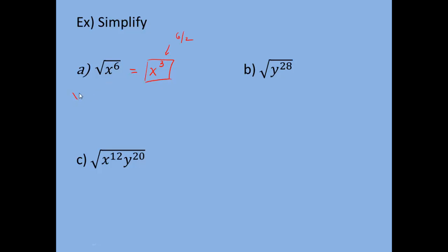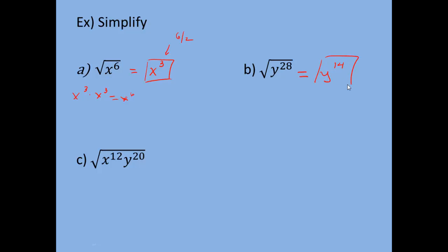The reason this works is because x to the 6th is x to the 3rd times x to the 3rd. When you multiply, you add exponents, giving you x to the 6th. So the square root of x to the 6th asks what times itself gives you x to the 6th — the answer is x to the 3rd. For the next one, the square root of y to the 28th: that's an even exponent, so we know it's a perfect square. To find the power, you do 28 divided by 2, which is 14, giving you y to the 14th.